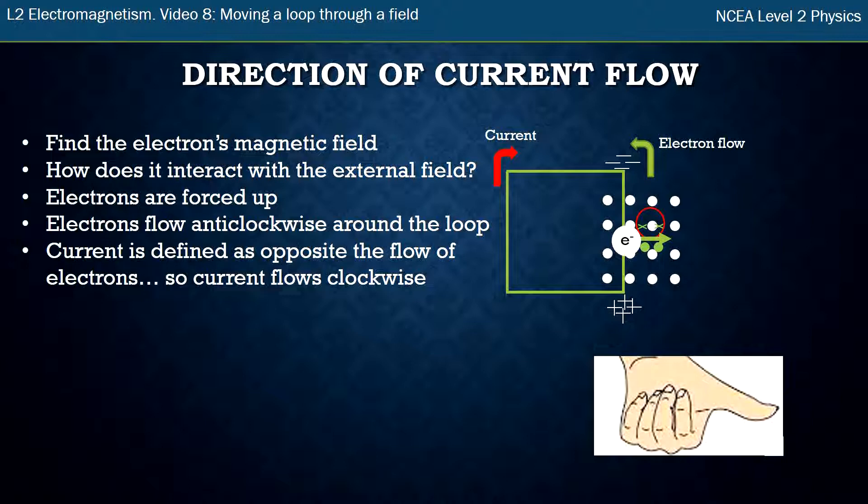Current is defined as the opposite to the flow of electrons. There's a historical reason for that, and so even though the electrons flow anti-clockwise we can say in this loop our current is flowing clockwise. That's the process we need to go through to figure out which way the current goes.